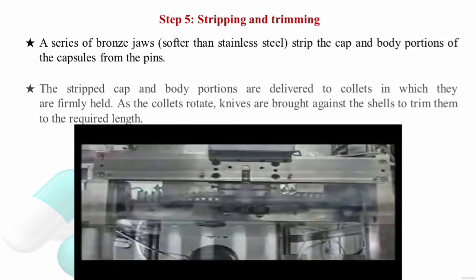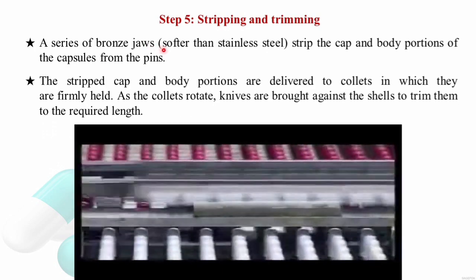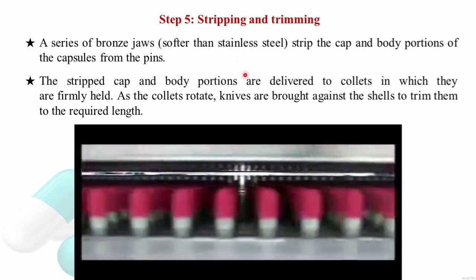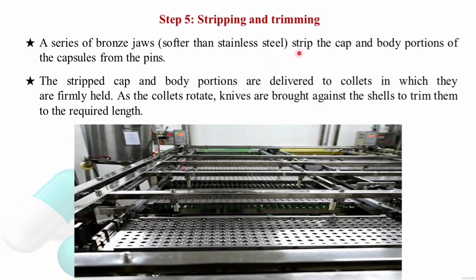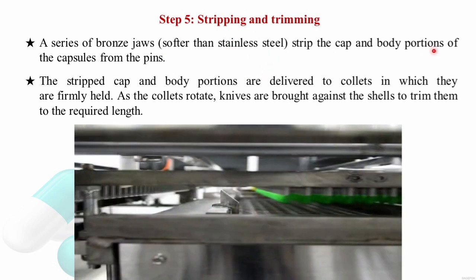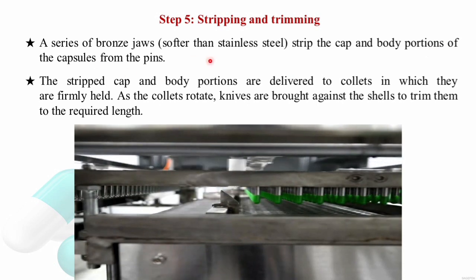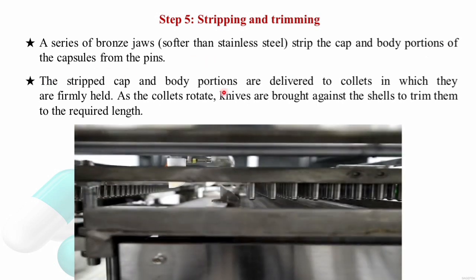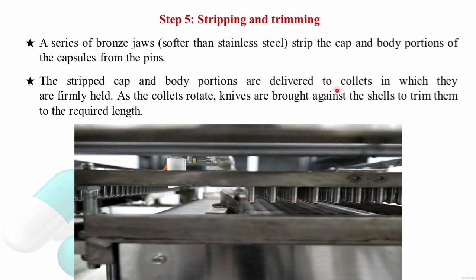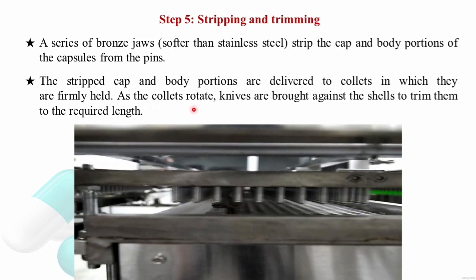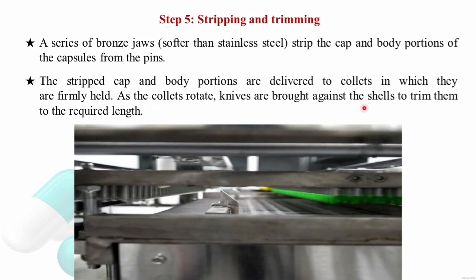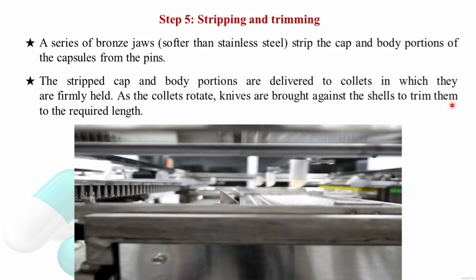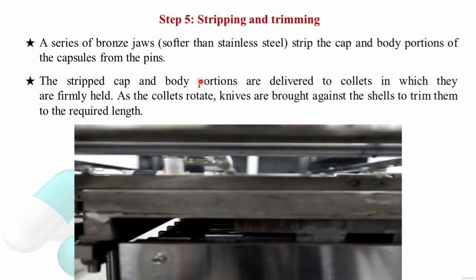Step 5: Trimming and stripping. A series of bronze jaws — softer than stainless steel — strip the cap and body portions of the capsules from the pins. The stripped cap and body portions are delivered to collets in which they are firmly held. As the collets rotate, knives are brought against the capsule body and cap to trim them to the required length.